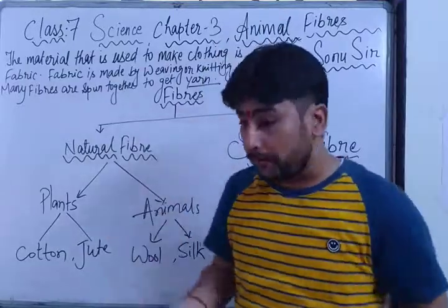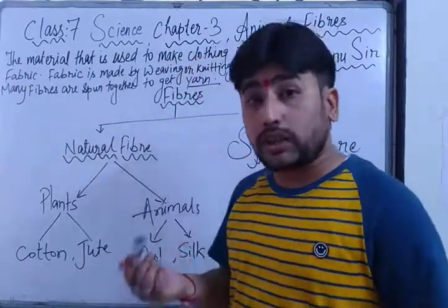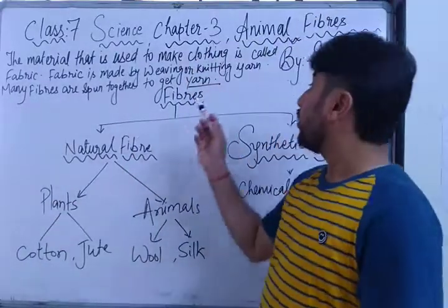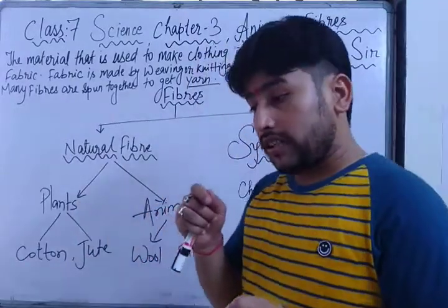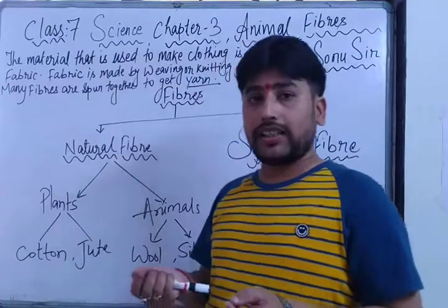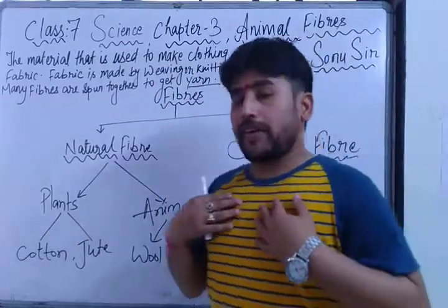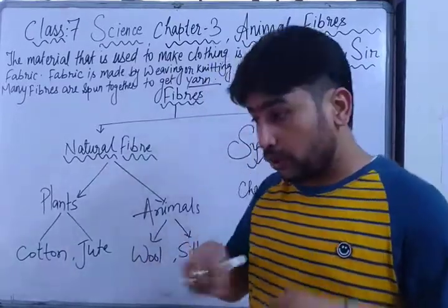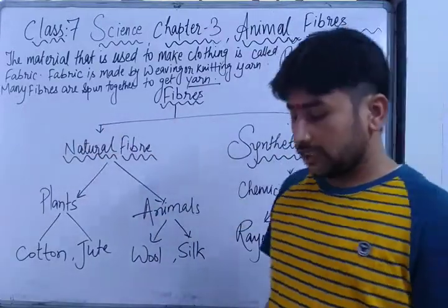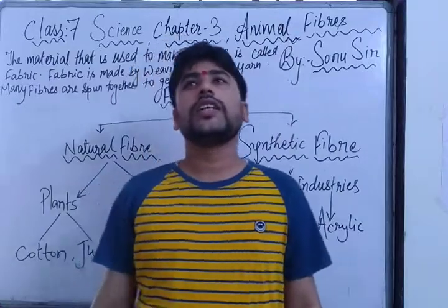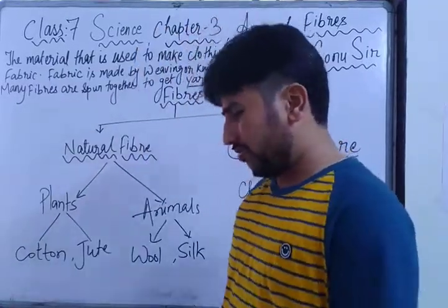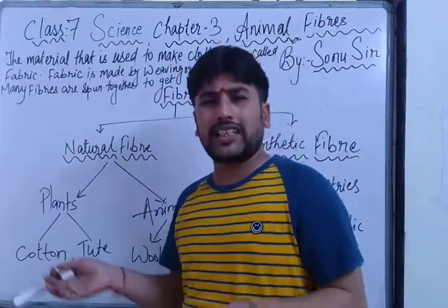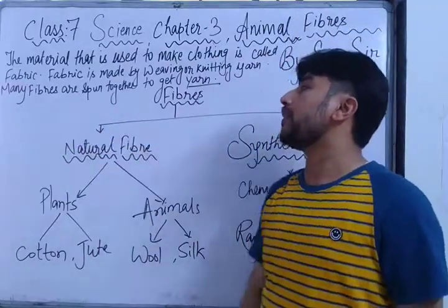Clothes are made by weaving or knitting — these are artificial methods. A single thread of cloth is called yarn. Many fibers are spun together to get yarn. Nowadays, you will see a mixture of cotton and synthetic clothes. Cotton and synthetic, or cotton and rayon, or cotton and any other fiber are mixed, and then the clothes are made.